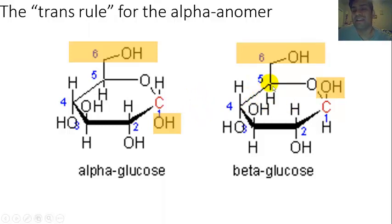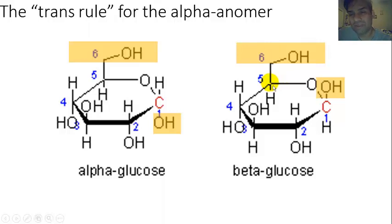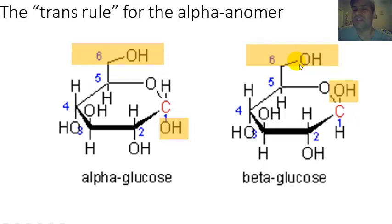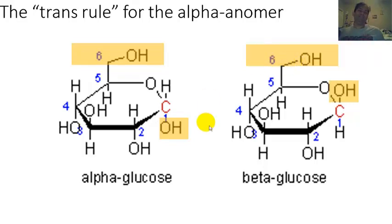On the flip side, if the carbon that determines stereochemistry — the farthest chiral carbon from the anomeric carbon, in this case carbon 5 — has its substituent on the same side or same face of the ring as the substituent on the anomeric carbon, as you can see here where the CH₂OH and the OH are both on the same side of the Haworth projection ring, then that would be the beta anomer. That's one way to distinguish between alpha and beta anomers.